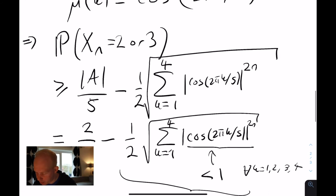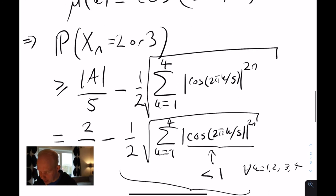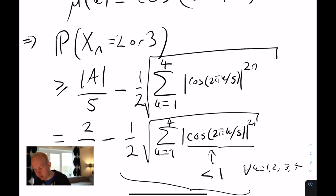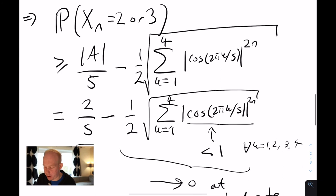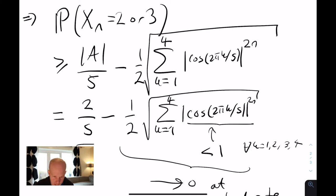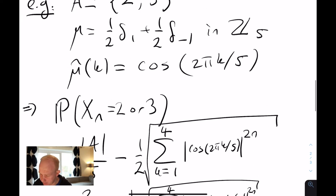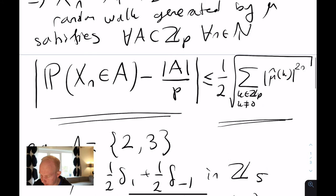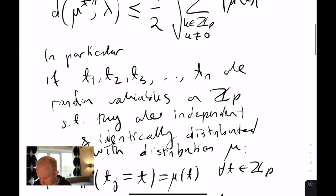So the probability that xn takes the value 2 or 3 is very quickly at least close to 2/5 — which is the uniform probability. This gives a very quick way to compute probabilities of events for random walks using the upper bound lemma.